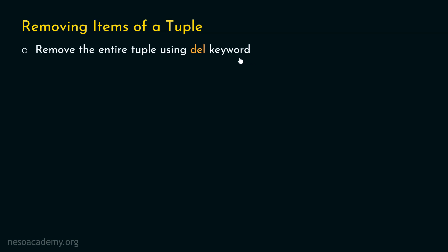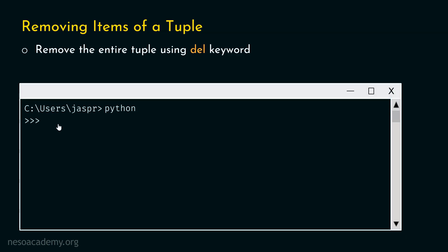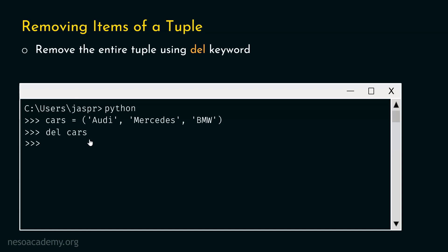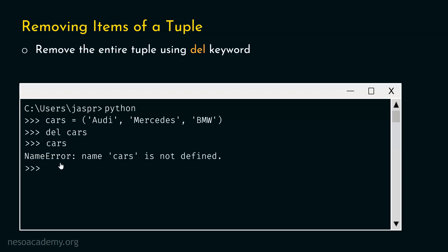Let's open our command prompt. Let's type: cars = ('Audi', 'Mercedes', 'BMW'). Let's hit enter. Now let's say we want to delete this entire tuple. For this, we will type: del cars. Let's hit enter. As we are getting this prompt, this means the tuple is deleted. Let's type cars to verify. We are getting a NameError: name 'cars' is not defined, which means the tuple is deleted.